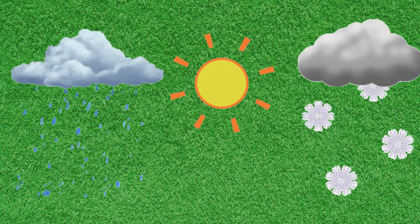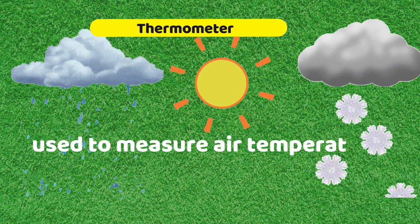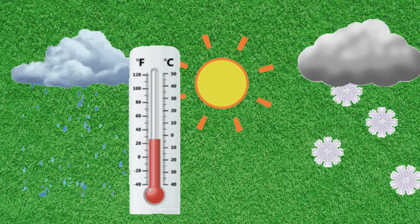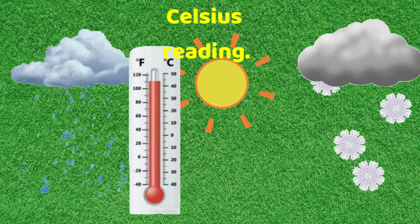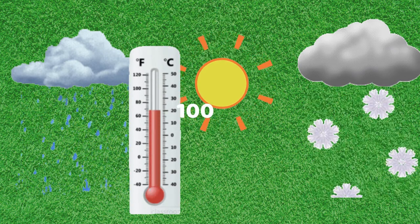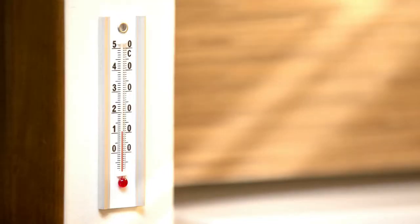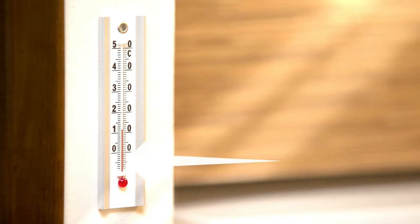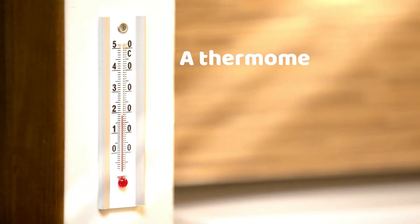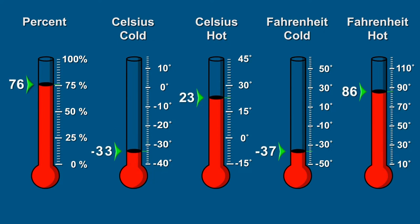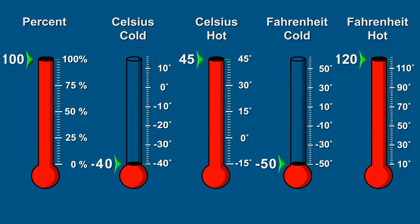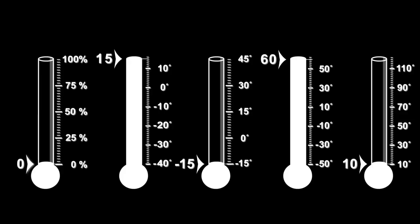One of the ways to predict the weather is to measure the temperature. A thermometer is used to measure air temperature. A room thermometer has numbers on each side — the left side shows the Celsius reading, with a highest number of 100 and a lowest of 0. Look at the red column of the thermometer; the number near the end of the red column tells the temperature of the air. A thermometer may bear the Fahrenheit scale, the Celsius scale, or both.